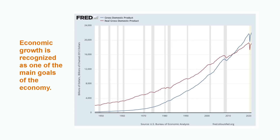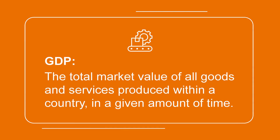For instance, you can see in the graph that the US economy was growing between 2012 and 2019. To measure the size of the economy, economists use Gross Domestic Product, or GDP. GDP is the total market value of all final goods and services produced within a country in a given amount of time — for instance, yearly, per semester, or per quarter.